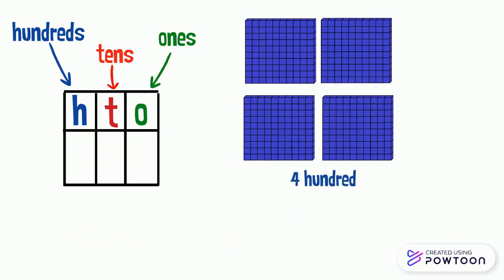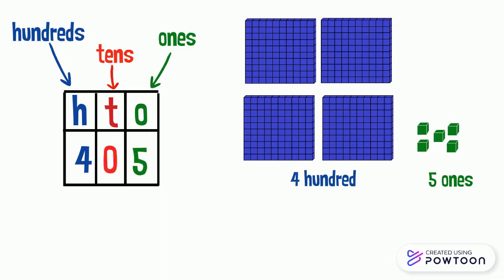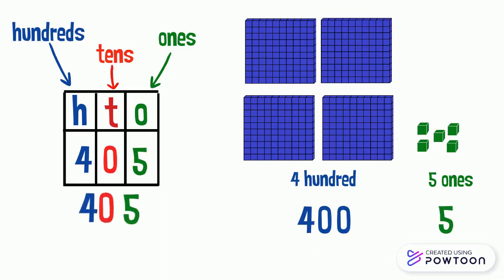Four hundred and five ones. We will write four in the hundreds place and five in the ones place. And since we don't have tens, we will write zero in the tens place. Four blocks of hundred equals four hundred, five ones equals five. So the number is four hundred five.